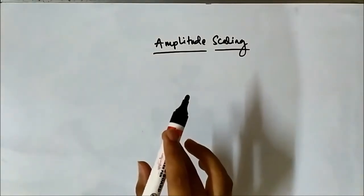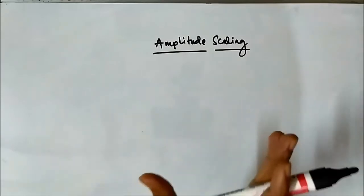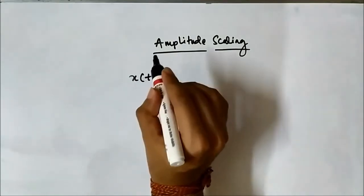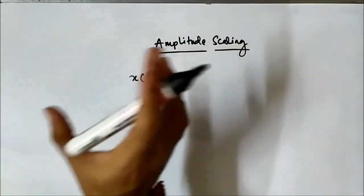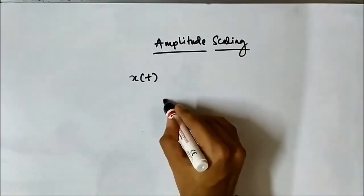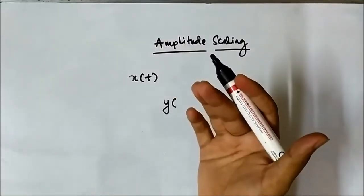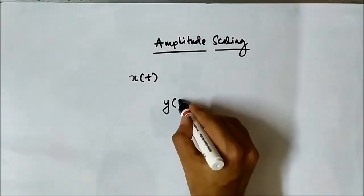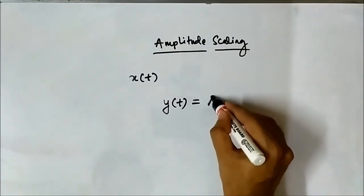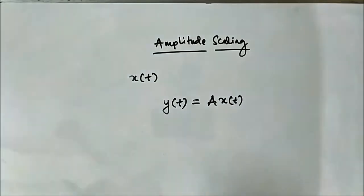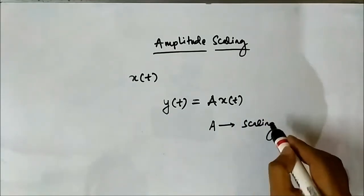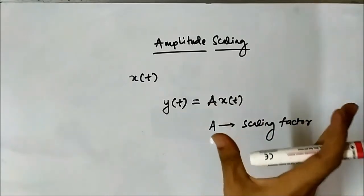How is the amplitude scaling operation represented? Suppose we have an original reference signal x(t) and we have to perform amplitude scaling on that signal. The new signal we get as a result of amplitude scaling, let us represent it by y(t). That will be equal to A·x(t), where A is the scaling factor — by what amount we are scaling the signal.